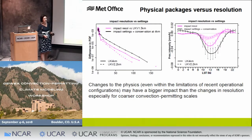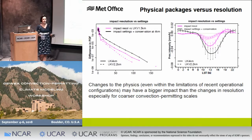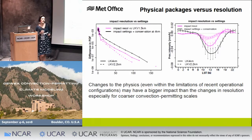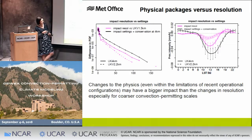We also compared whether increasing resolution is more important than changing physical packages. The difference when changing the physical package — the black line — can be much stronger than the difference between 4 km and 1.5 km (solid pink) or between 2.2 km and 1.5 km (dashed pink). Similarly for the diurnal cycle: when the black line is larger, the impact of the physics settings exceeds the impact of resolution changes.